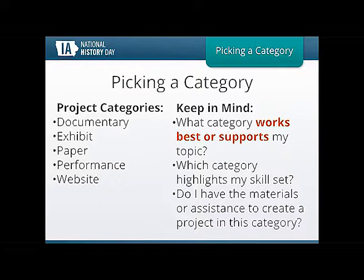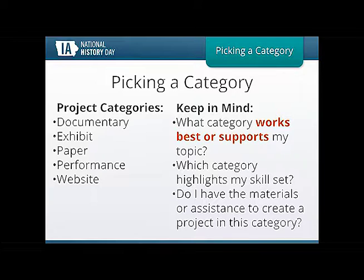So let's talk about picking categories. You've got your topic, you've done some research, and now you're figuring out how to present it. We have five categories in National History Day: documentaries, exhibits, papers (always individual), performances, and websites. You want to keep in mind: what category works best or supports my topic? Think about your topic's strengths — are there a lot of primary visuals, a lot of audio, or would it be best featured in a paper where you don't have as many visuals?